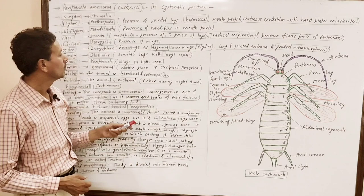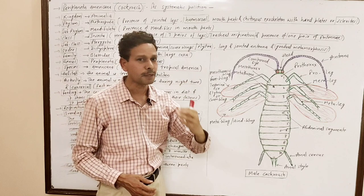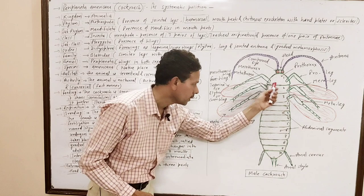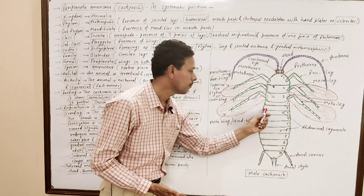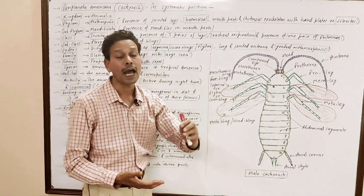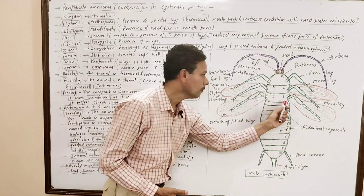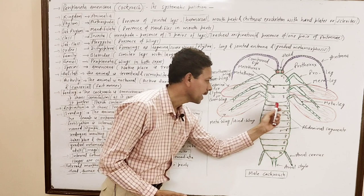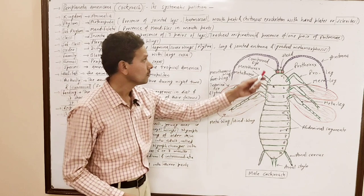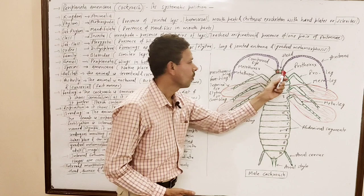Tracheal respiration is a characteristic feature of insects. Special types of tubes — trachea — are present inside the body, open outside by spiracles or stigmata. In case of cockroach, there are 10 pairs of stigmata — note down for competition students — two pairs on the thoracic segment and eight pairs on the abdominal region. On the head region, there is a pair of segmented sensory organs called antennae.